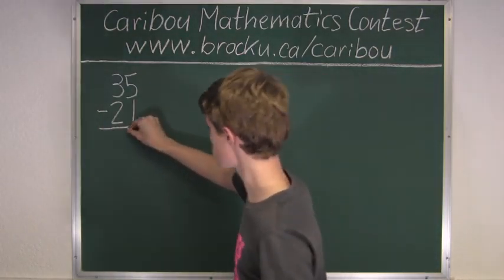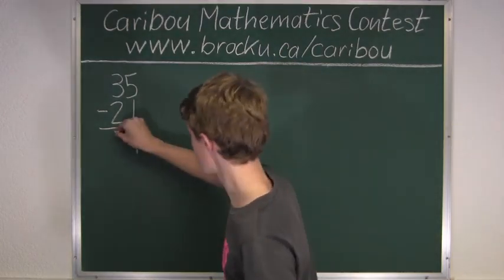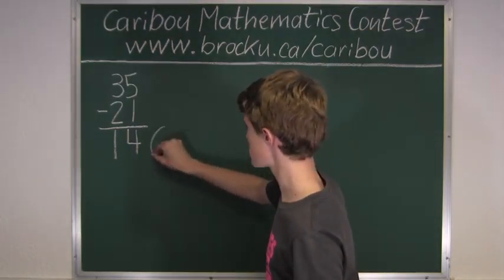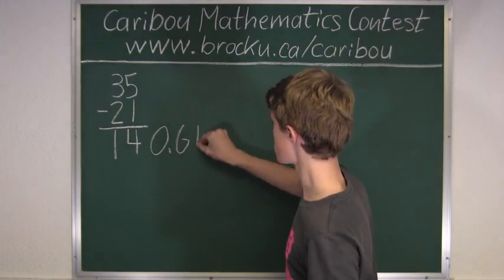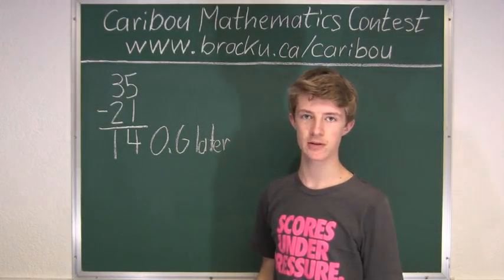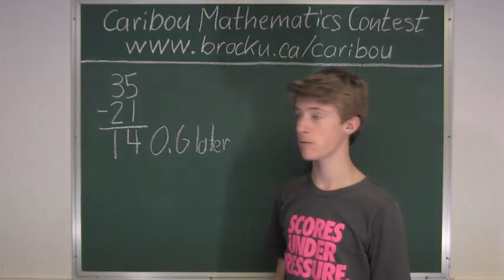5 minus 1 is 4, and 3 minus 2 is 1. So we know that 14 Olympic Games later, after the 21st Winter Olympics, the 35th Winter Olympics will be held.